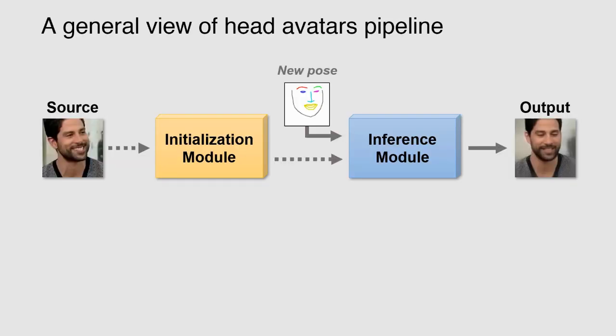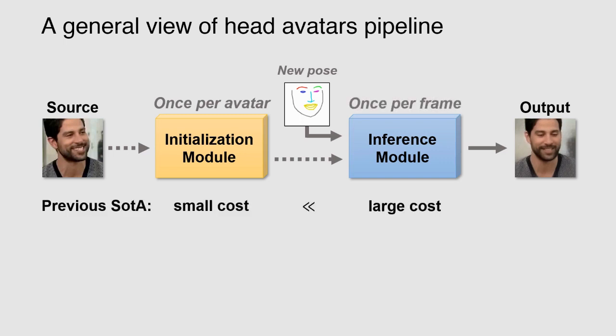A general pipeline for synthesis of head avatars consists of two parts. The initialization module is run once per avatar and outputs person-specific parameters of the inference module, which then predicts an image for each given pose and runs once per frame. Previous works on neural avatars have achieved remarkable quality of the outputs at the expense of increasing the computational cost of the inference module while keeping the initialization cost low.